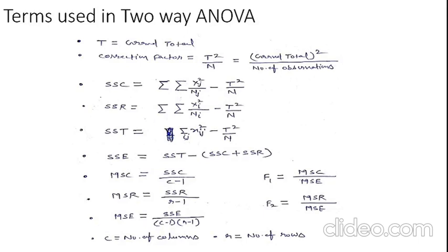Some formulas or some terms will also be used in the analysis of the two-way ANOVA. T is the grand total. Here is the correction factor. The correction factor is denoted by T squared upon N. T is the grand total and N is the number of observations.